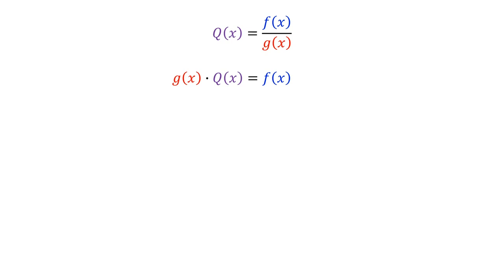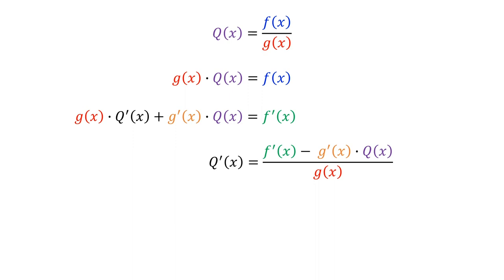Then we compute the derivative of each side. On the left, we use the product rule to get g times q prime plus g prime times q. And on the right, we get f prime. We can then solve this equation for q prime of x to get f prime minus g prime times q all over g.